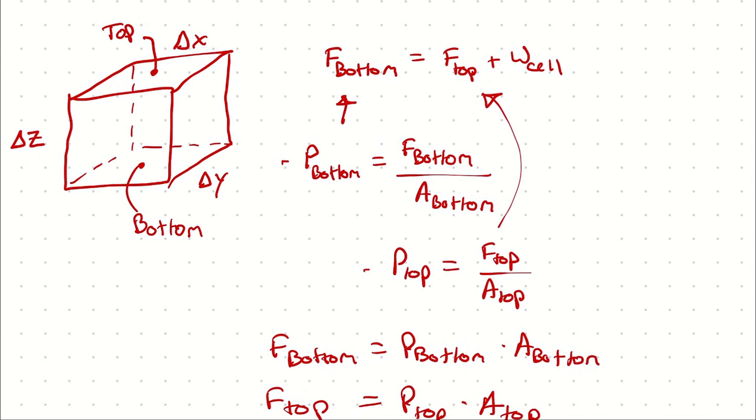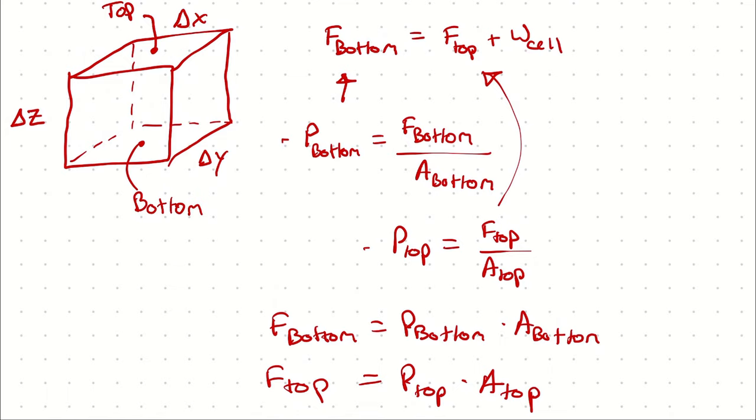While the weight of the cell might be useful in circumstances where we know the weight of all the water in a swimming pool, generally it's more convenient to describe intensive properties. Instead of describing the weight of the cell, it's more useful to describe the volume of the cell times the density of the fluid times gravity.